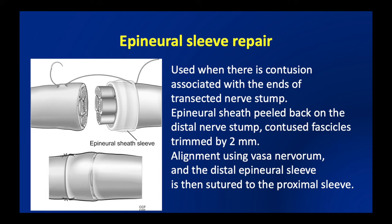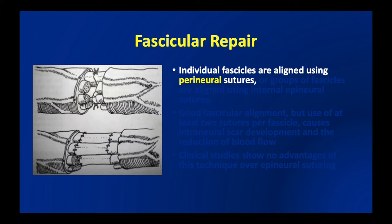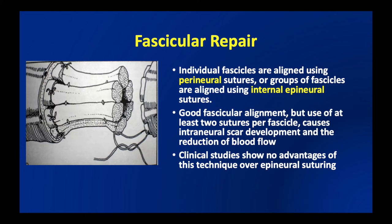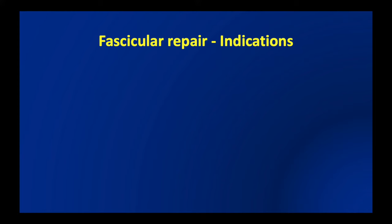When there is a contusion associated with the ends of the transected nerve stump, the epineural sheath can be peeled back on the distal nerve stump, the contused fascicles trimmed by about a millimeter, alignment is done using the vasa nervorum, and the distal epineural sleeve is then sutured over the proximal sleeve. In the technique of fascicular repair, individual fascicles are aligned using perineural sutures, or groups of fascicles are aligned using internal epineural sutures. These techniques ensure good fascicular alignment but require at least two sutures per fascicle, causing intraneural scar development and reduction of blood flow. Clinical studies show no advantage over a properly done epineural suturing.